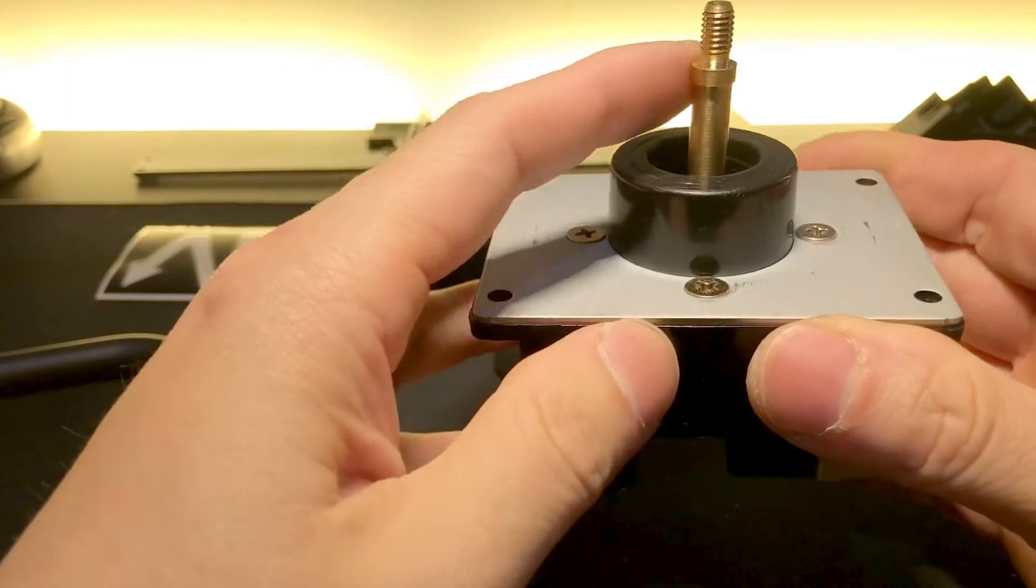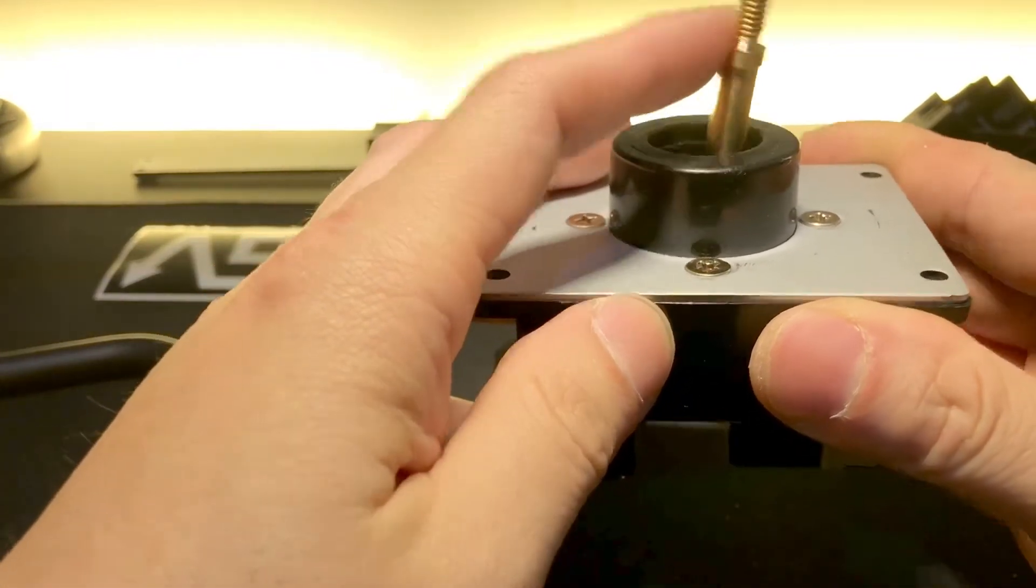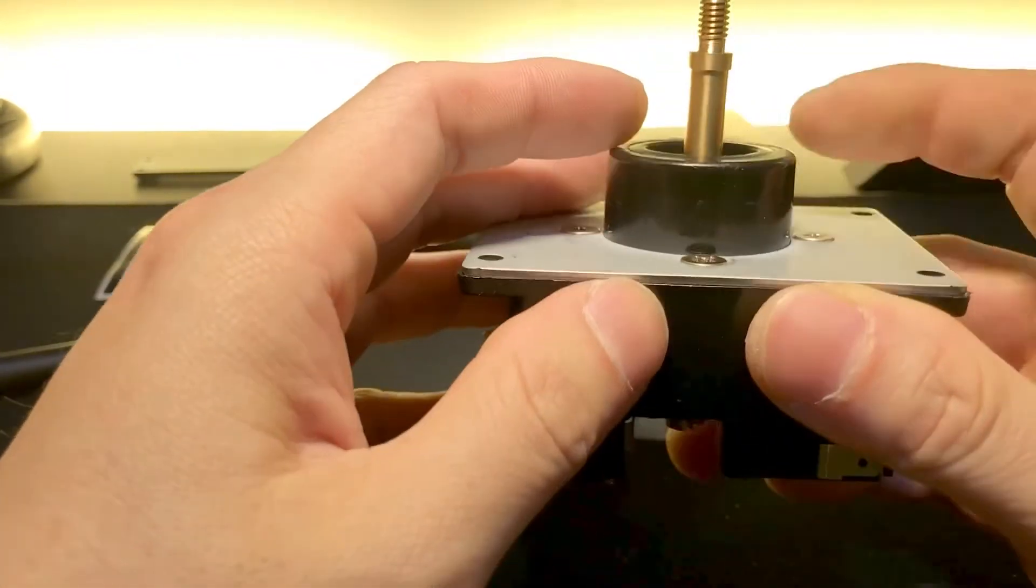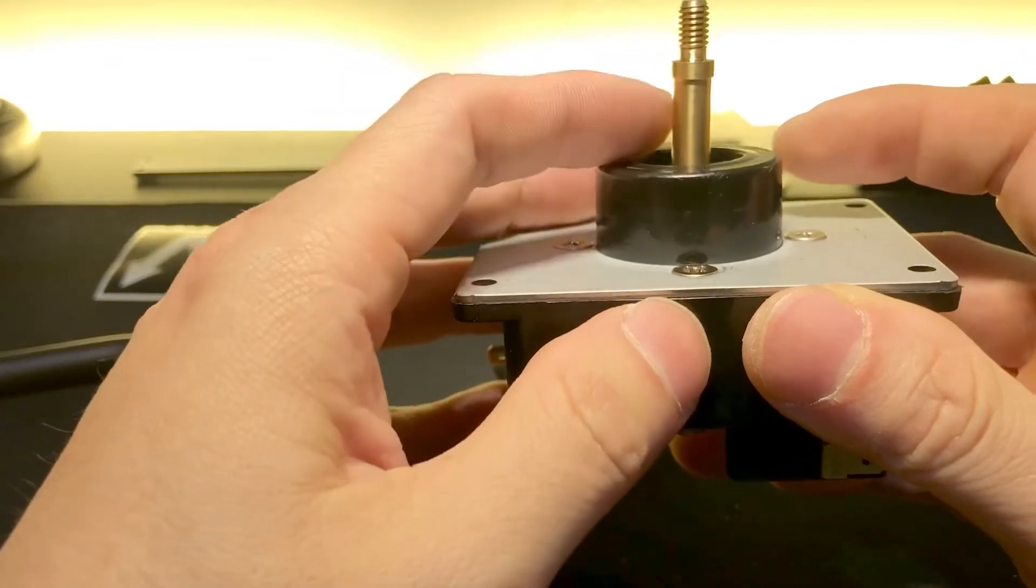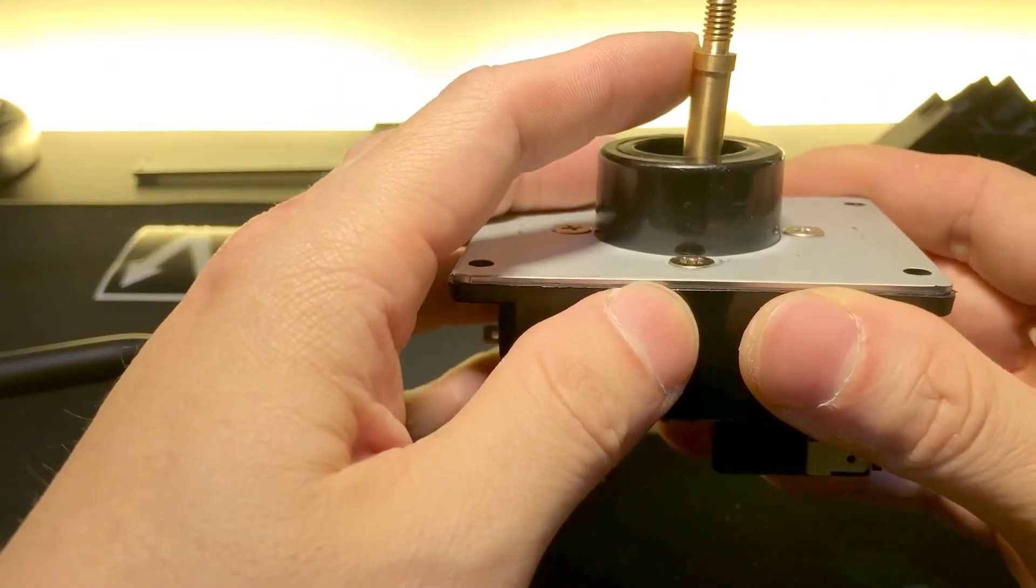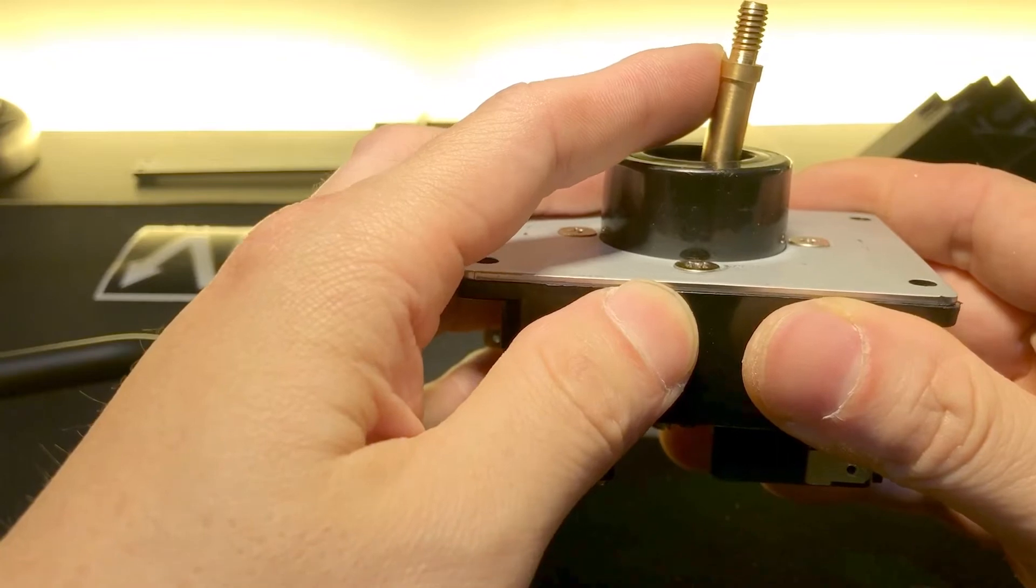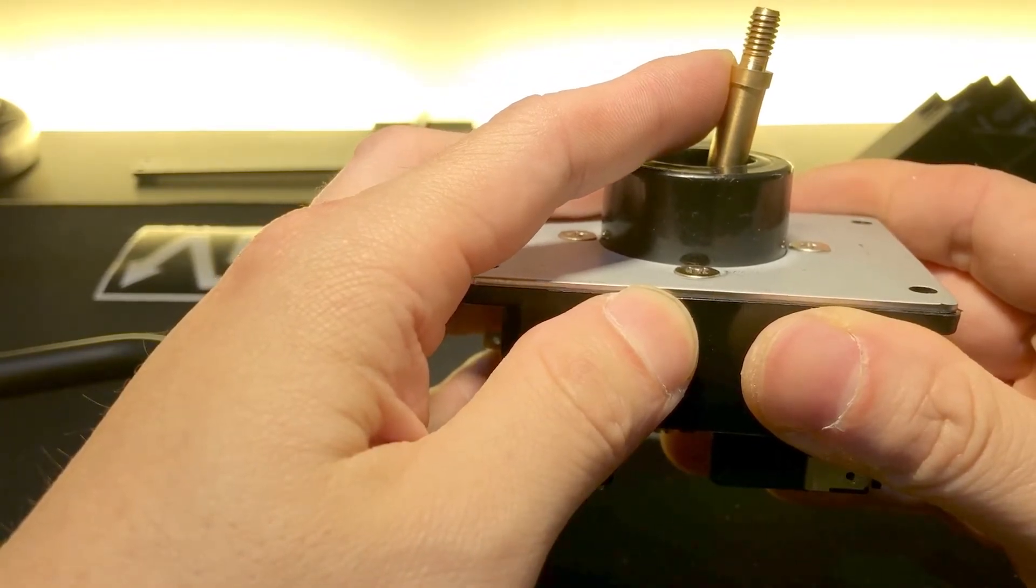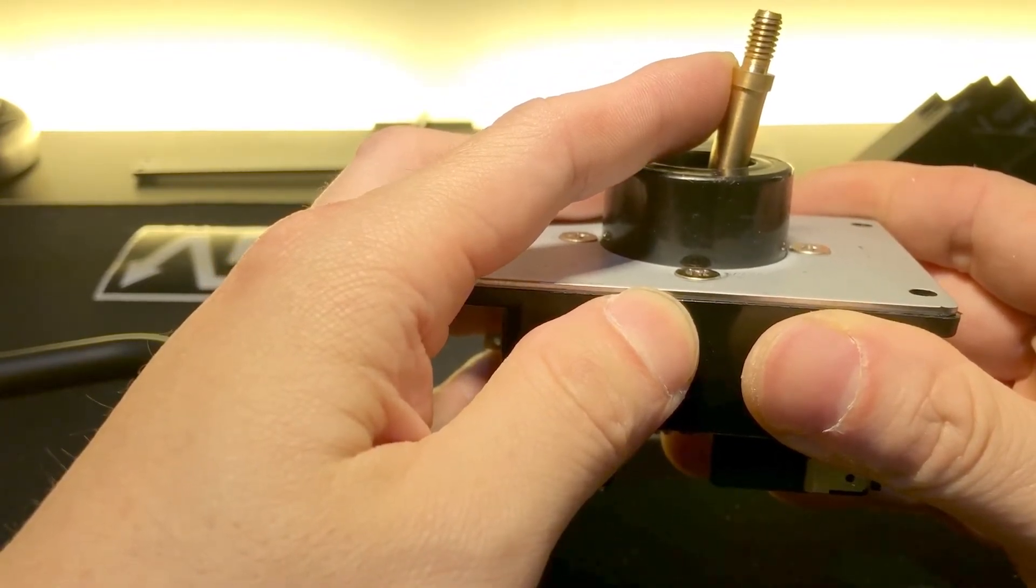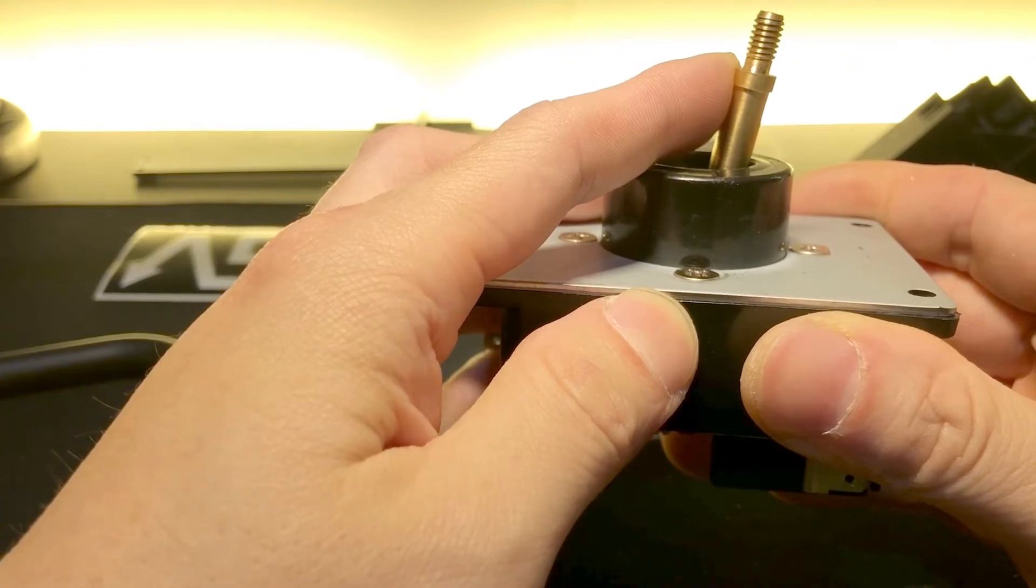As you can see, now we can have more throw distance. If you use a bigger shaft, it will stop when hitting the collar at this point. But because we use a smaller shaft, it still has more room to throw.